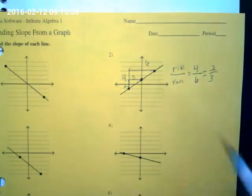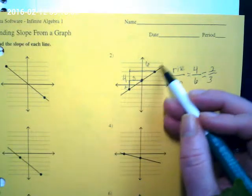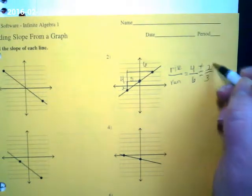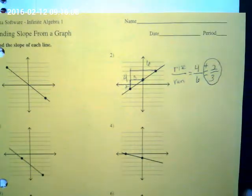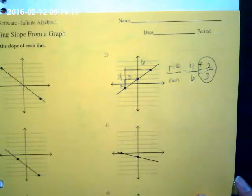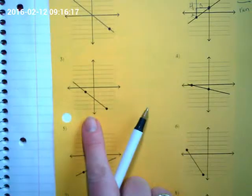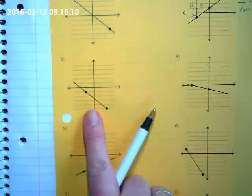And what kind of line is this? It's going from here up this way. Is that positive or negative? Positive. So our slope is positive two over three. Our slope is going to be a number that is showing our rise over run. Okay, so let's look at this one. What kind of line is that?